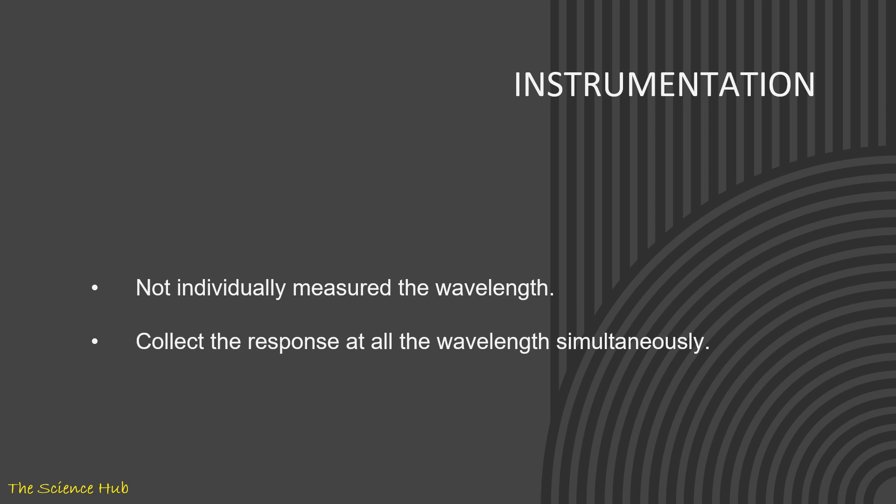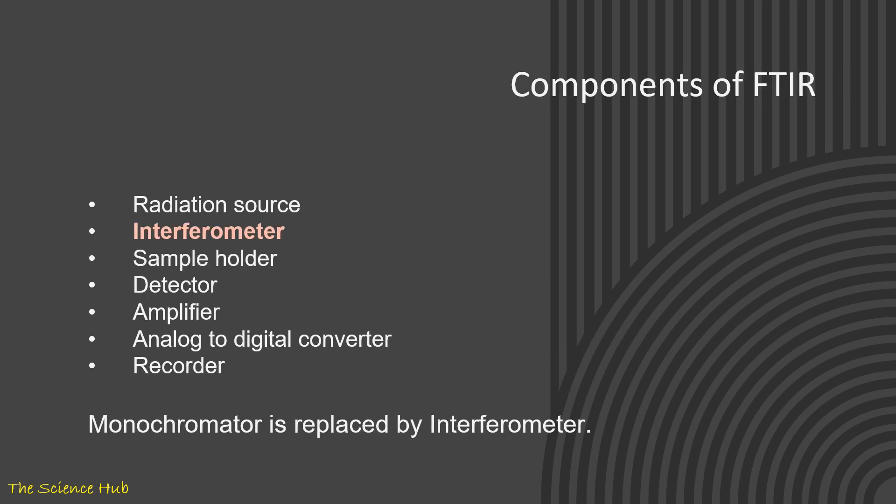Instrumentation: not individually measuring the wavelength—it collects the response at all wavelengths simultaneously. What are the components of FTIR? Radiation source, interferometer, sample holder, detector, amplifier, analog-to-digital converter, and recorder. Here you can observe that instrumentations or components are the same as IR spectroscopy, but one thing is interferometer. Instead of monochromator, here we are using interferometer, and it plays an important role in the spectroscopy.